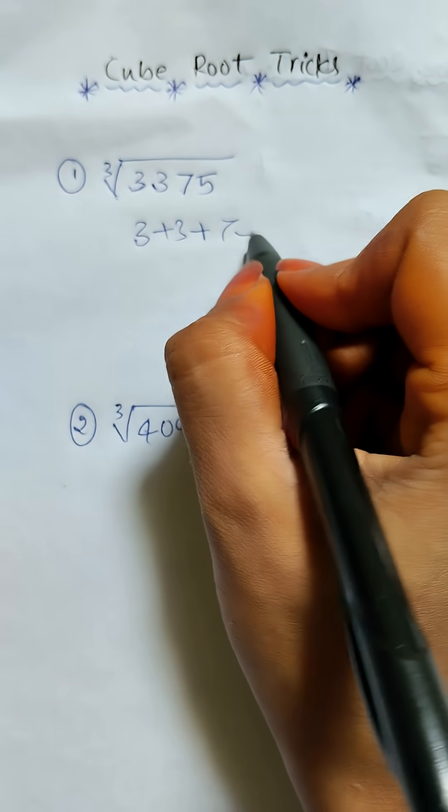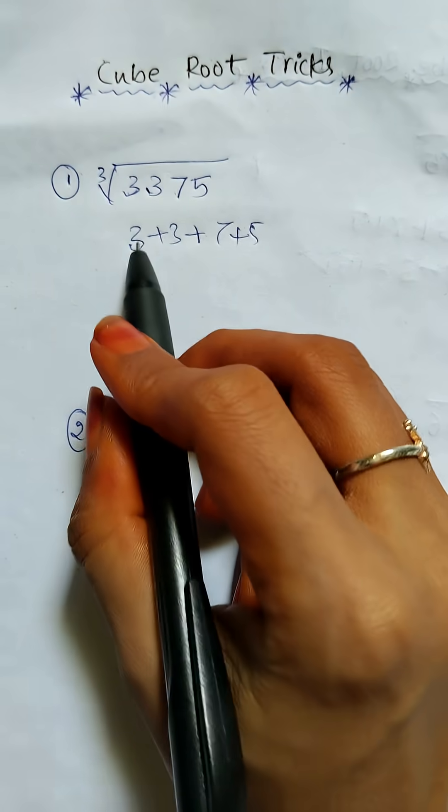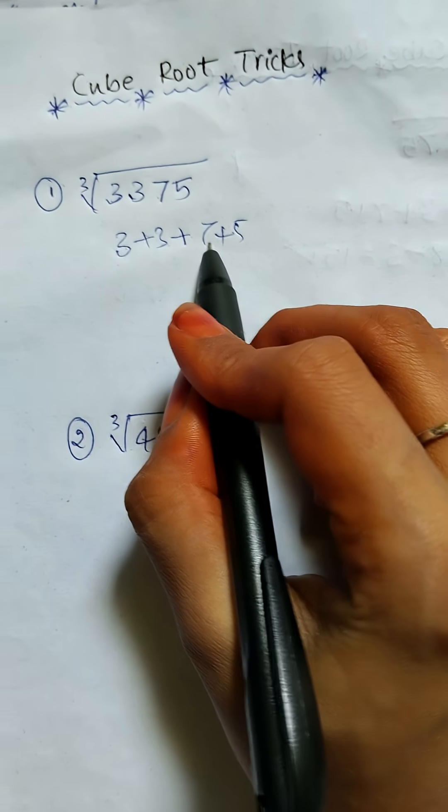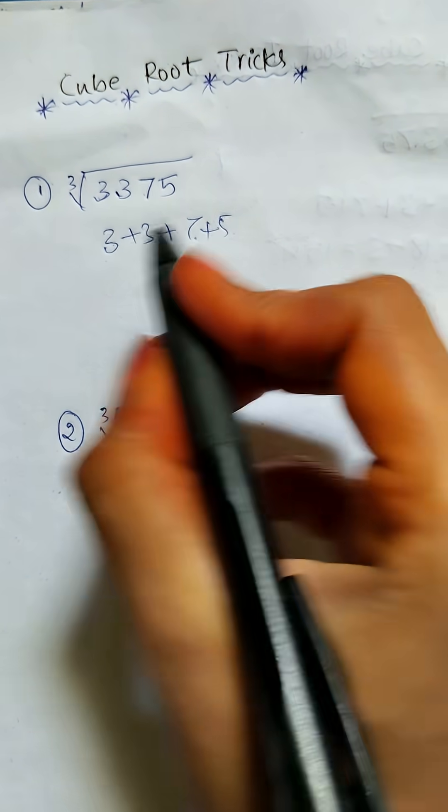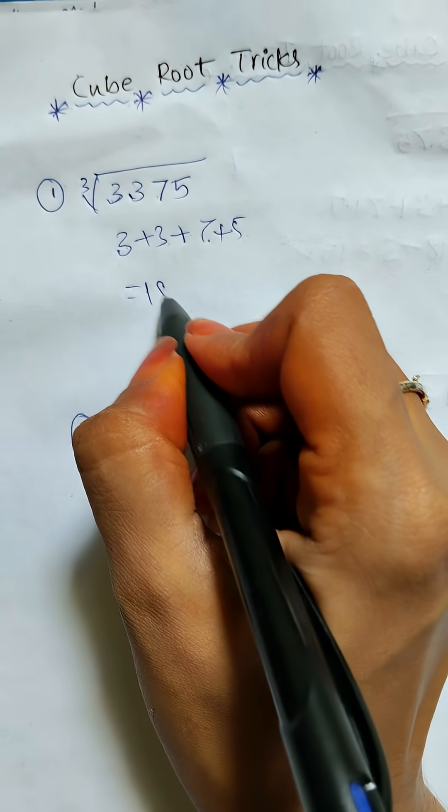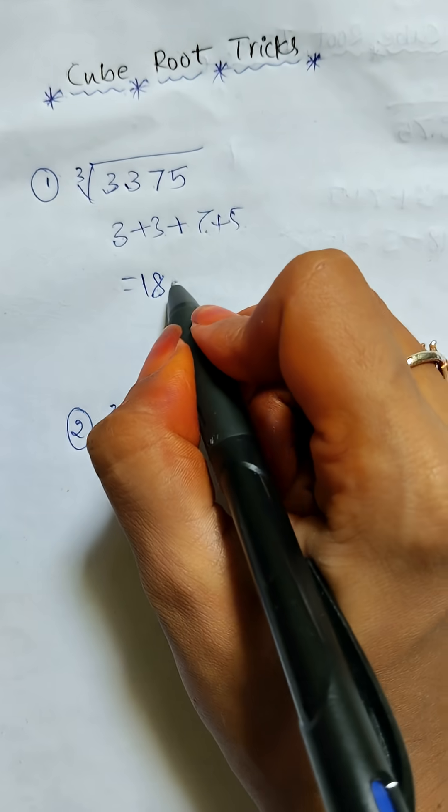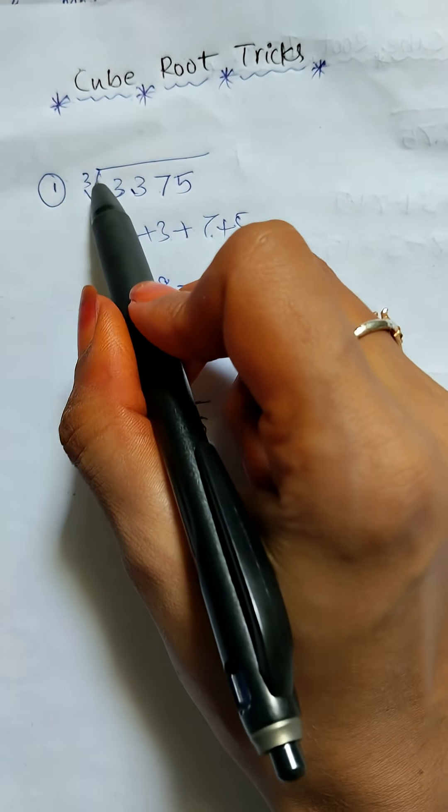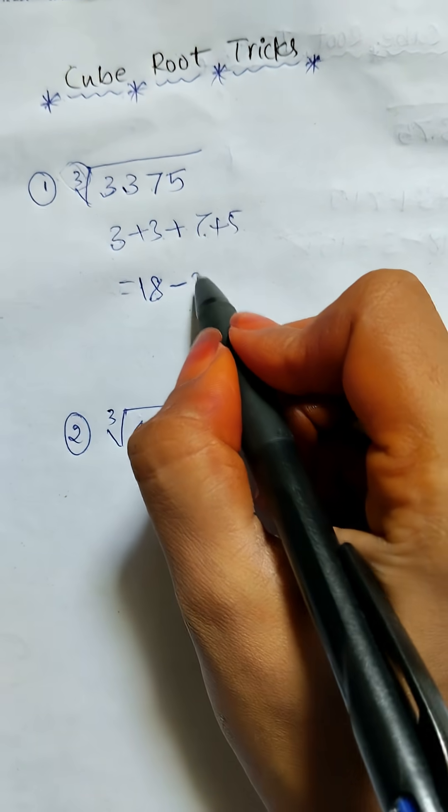You will get 3 + 3 = 6, 6 + 7 = 13, 13 + 5 = 18. Here the result is 18. Now you have to subtract 3 from that 18, and you will get 15.